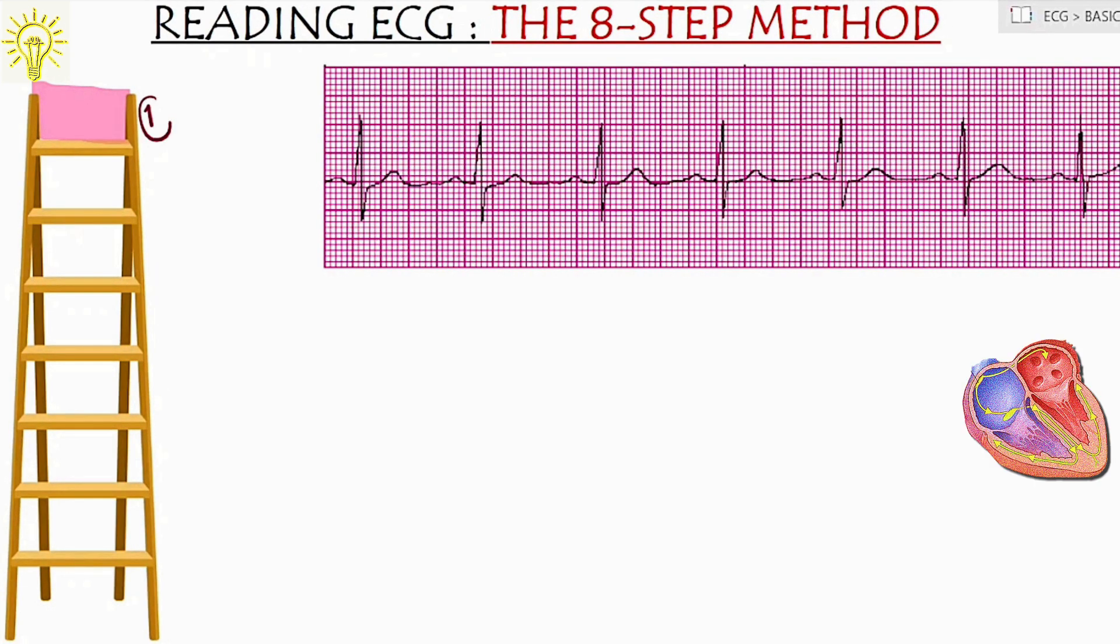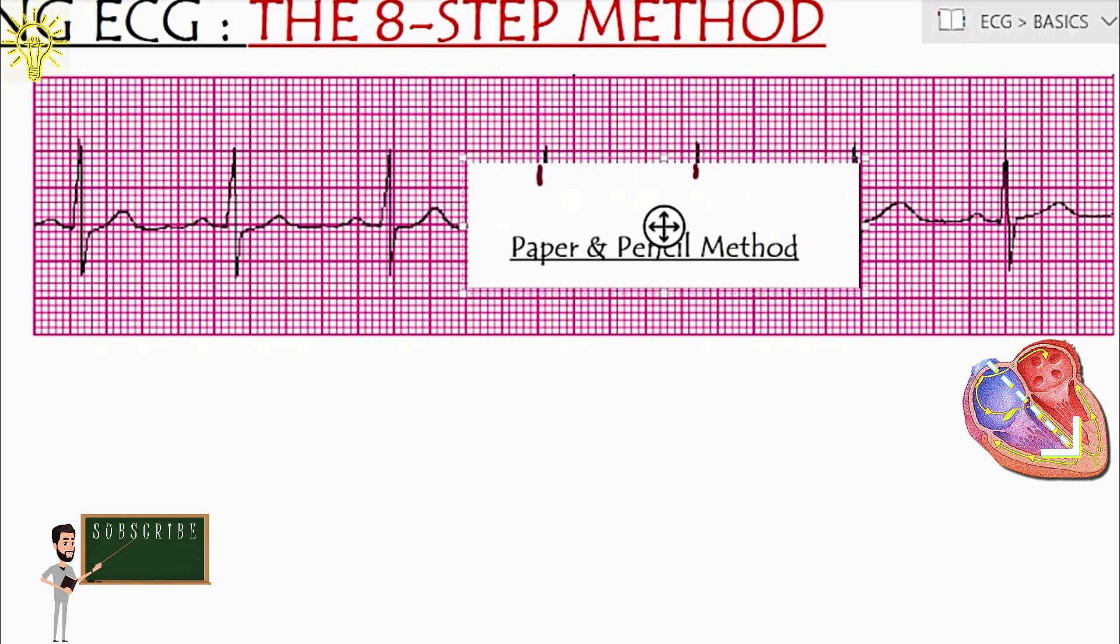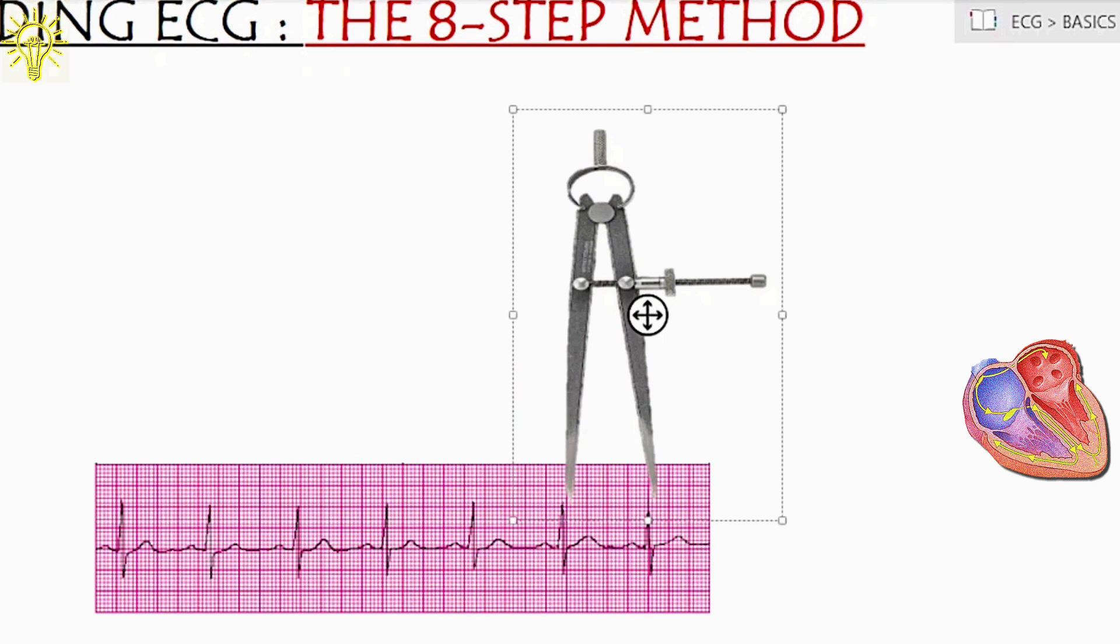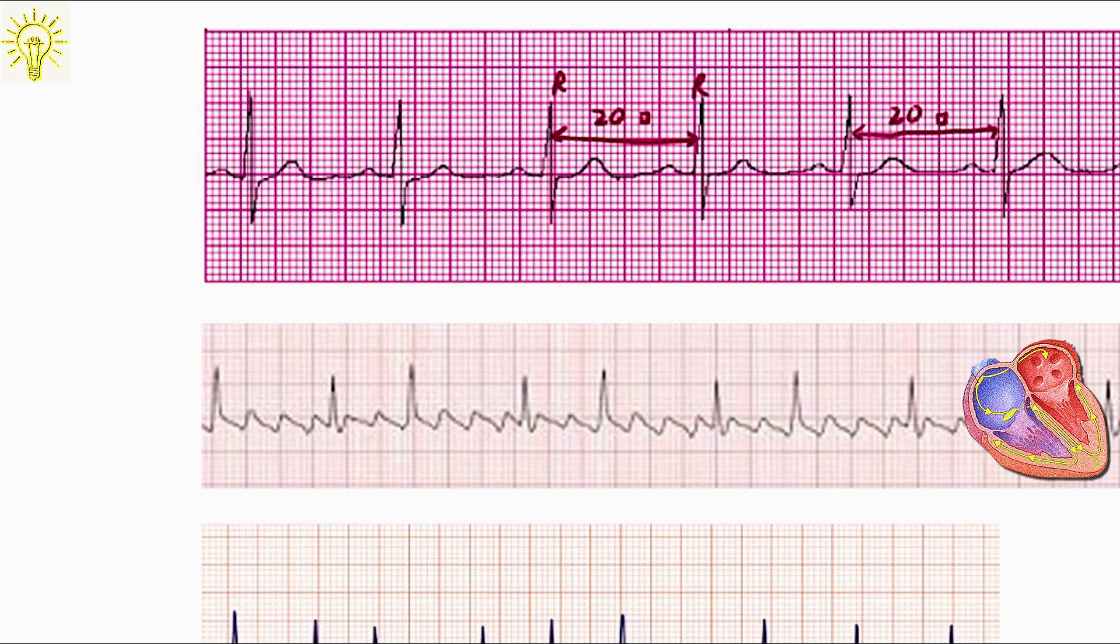Step 1: Check the rhythm. Place a paper on ECG strip right on top most point of R wave and mark two successive R waves. Now, tally the markings on paper with other R waves. In the first ECG strip, we have four large boxes or 20 small boxes between successive R waves at different points. So, we declare the rhythm as regular.